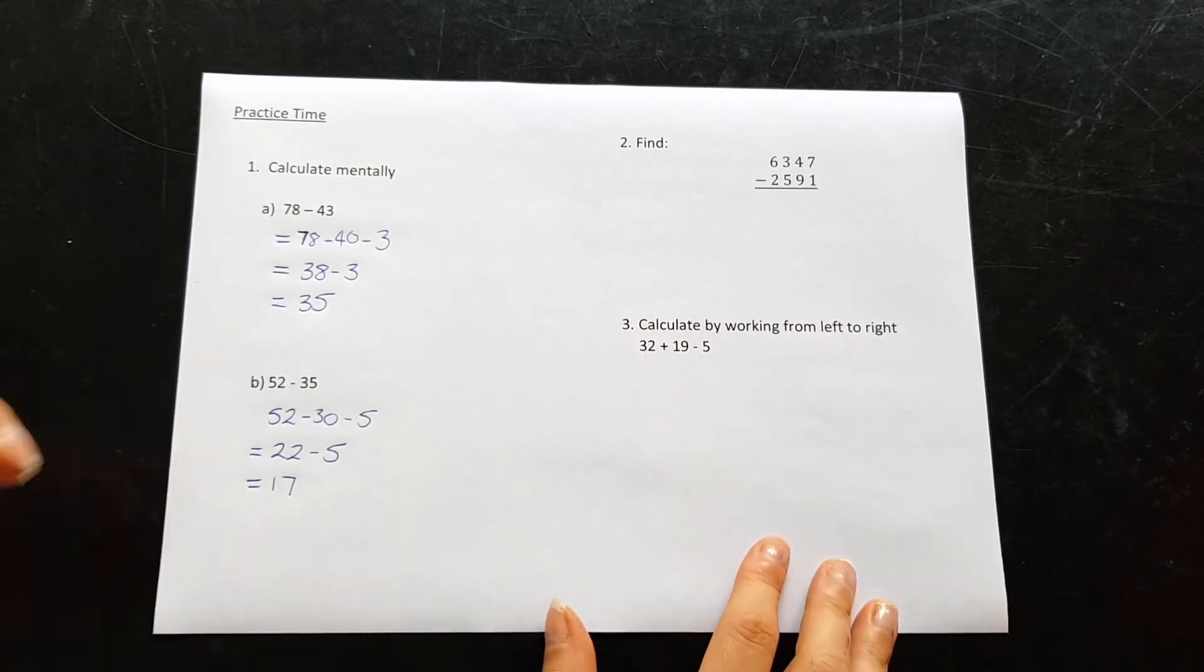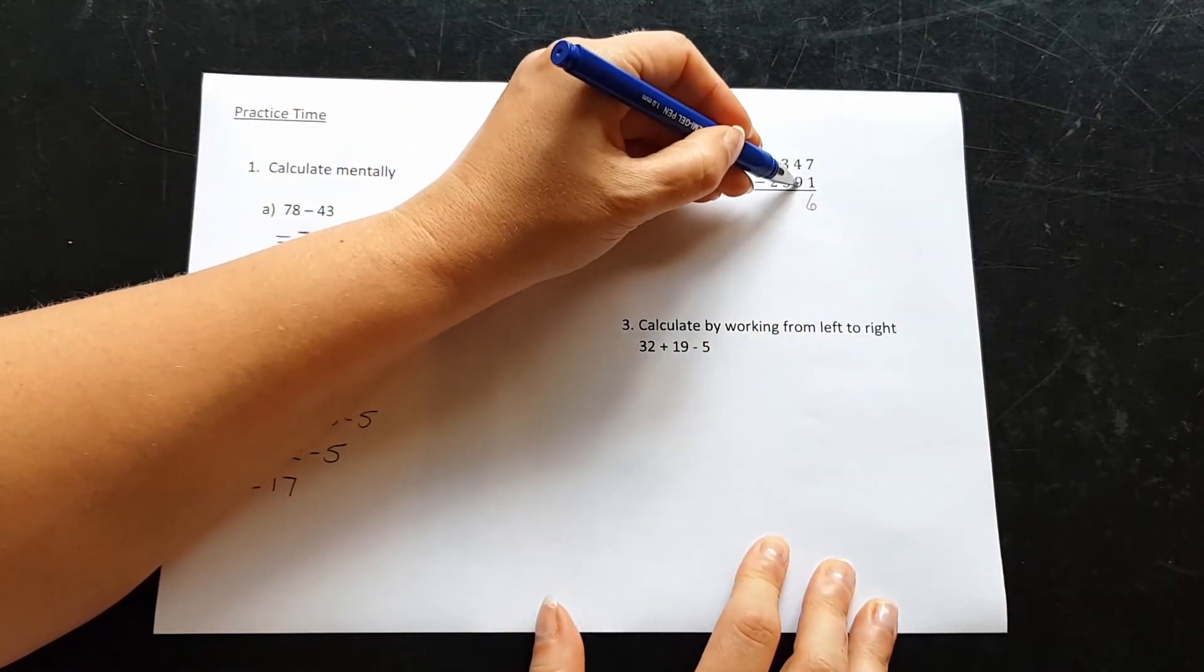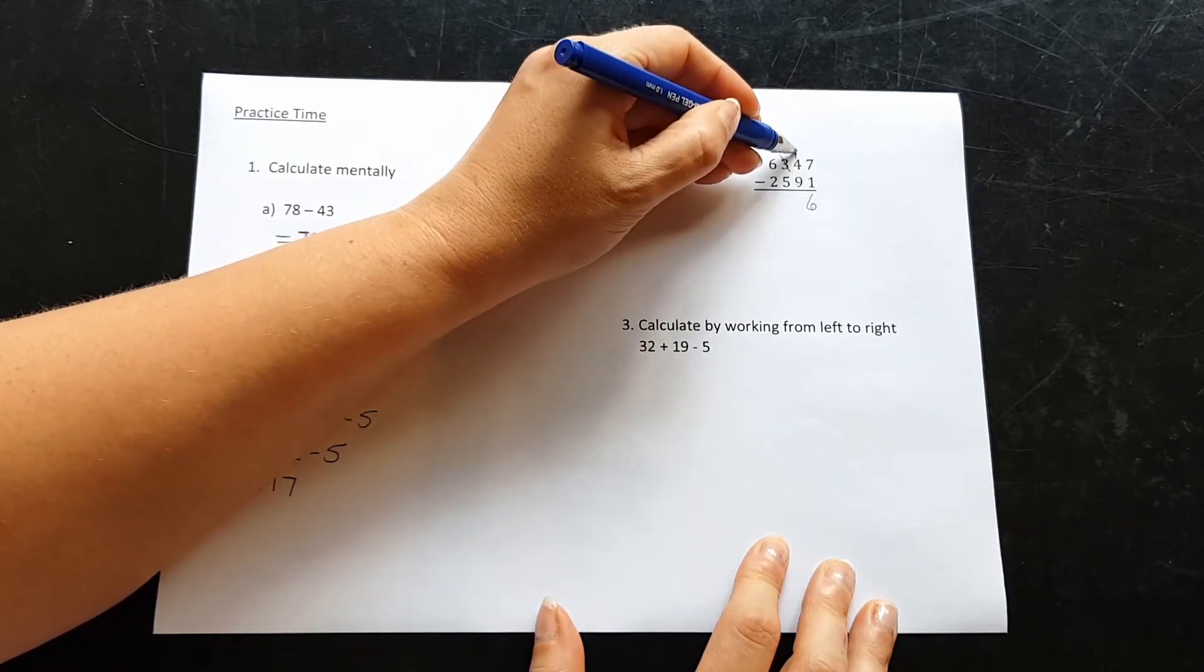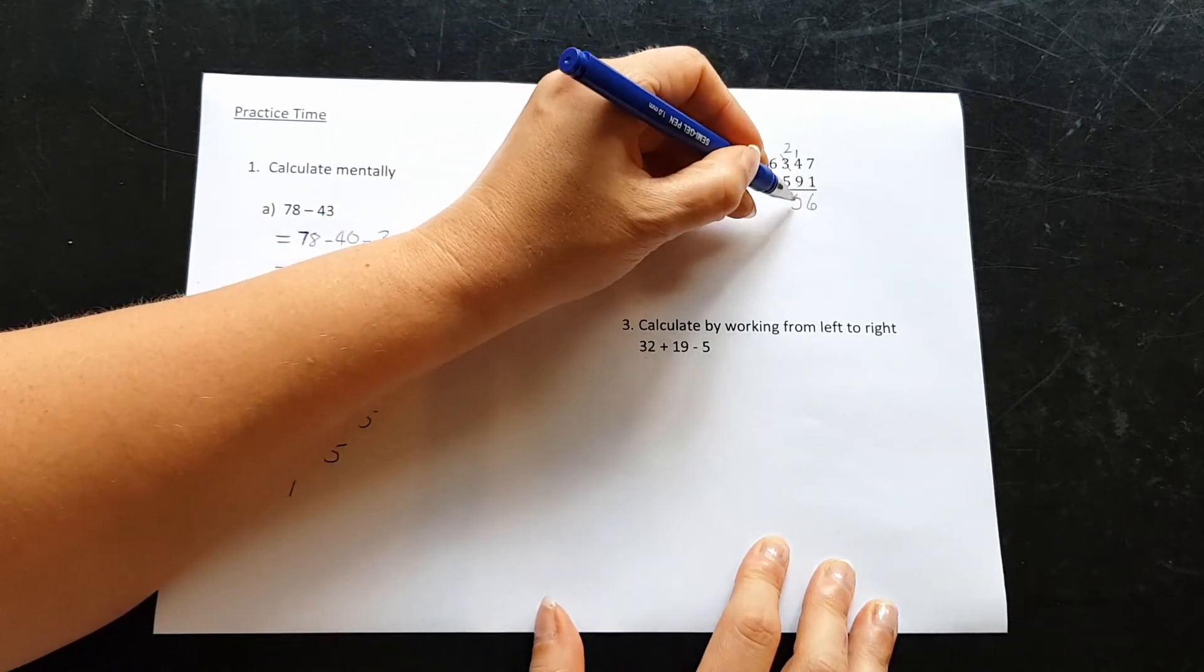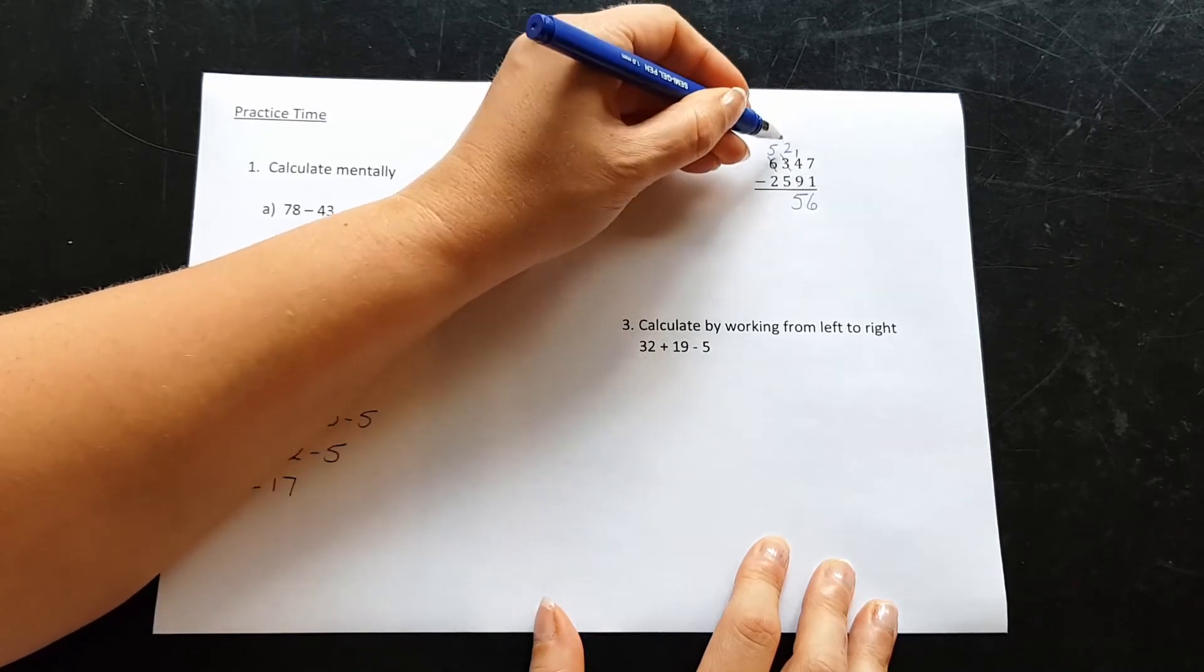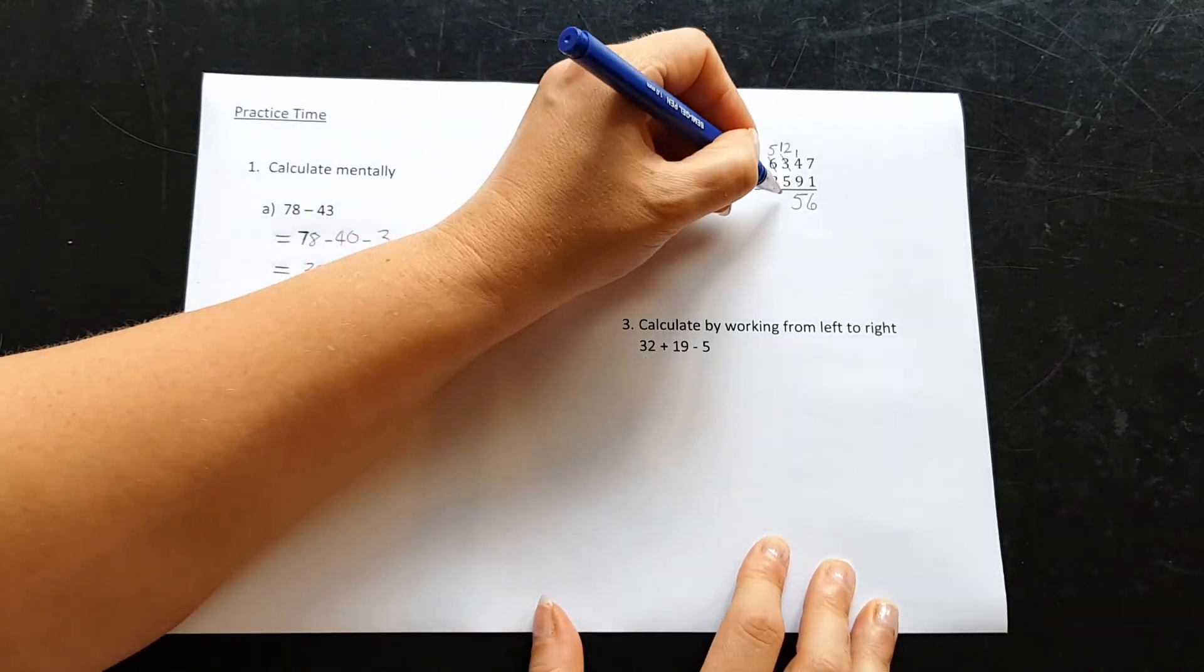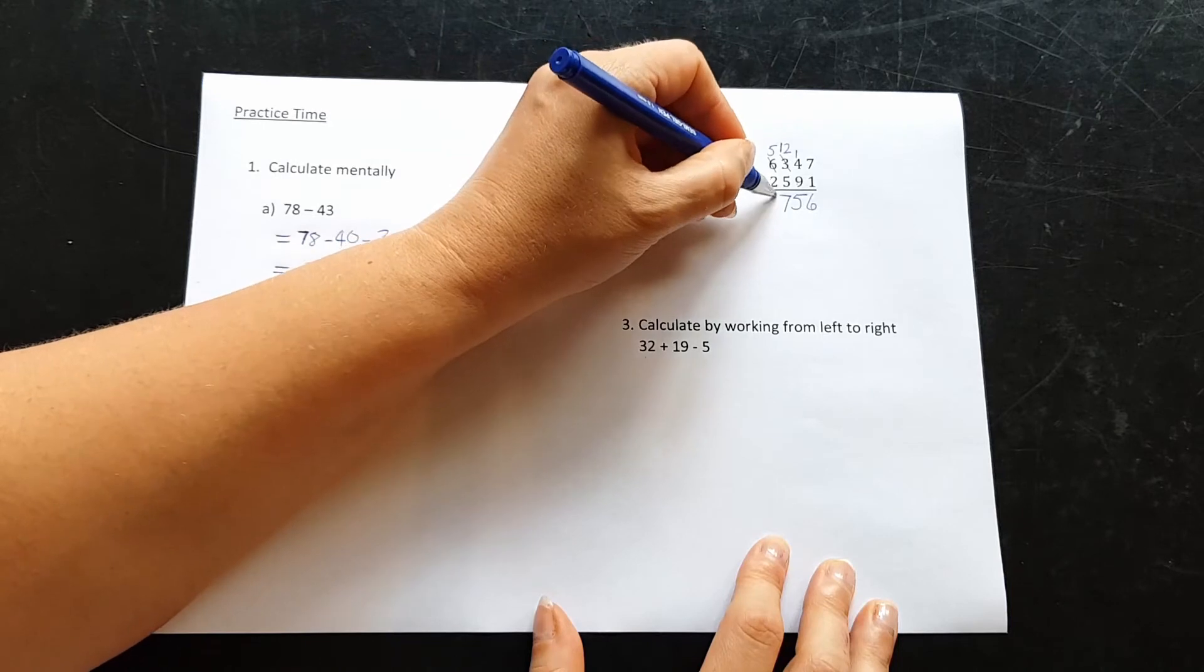Our column subtraction. 7 minus 1 is 6. 4 minus 9 we can't do. So we're going to borrow, put a 2 here, making this 14 minus 9, which is 5. 2 minus 5 we can't do. So we borrow from here, change that to a 5, and this will become a 12. 12 minus 5 is 7. And 5 minus 2 is 3.